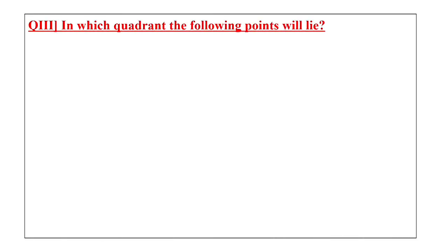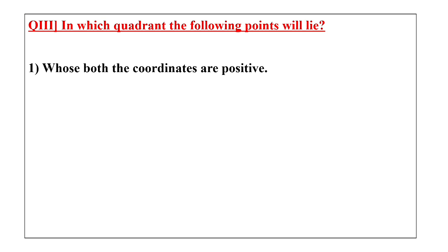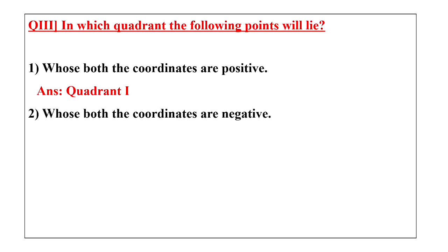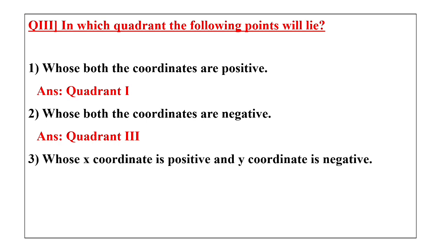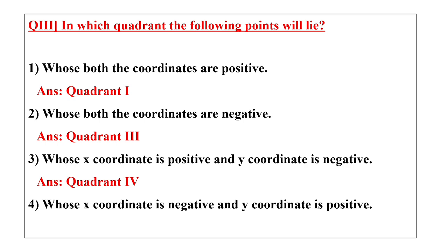Question number three: in which quadrant will the following points lie? A point whose x coordinate is positive and y coordinate is negative will lie in quadrant 4. A point whose x coordinate is negative and y coordinate is positive will lie in quadrant 2. The quadrant depends on the sign of the x coordinate and y coordinate.